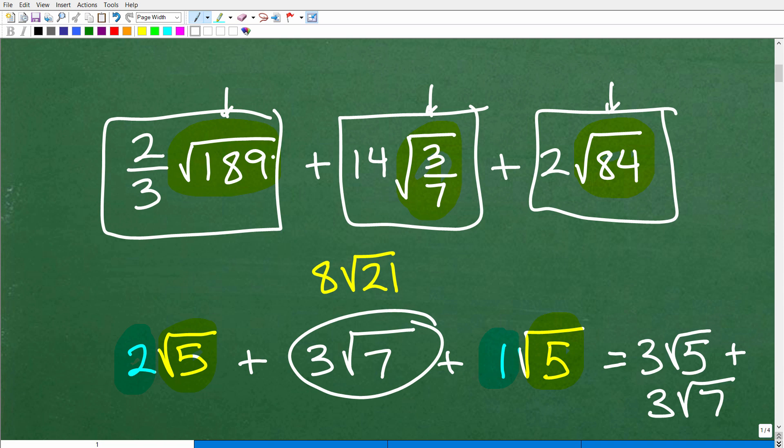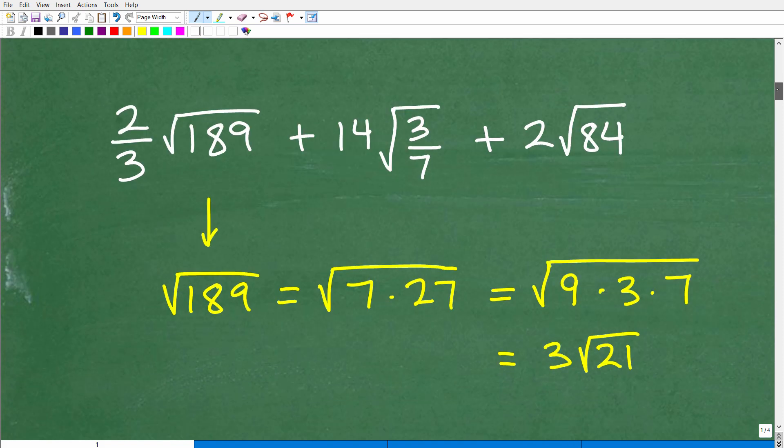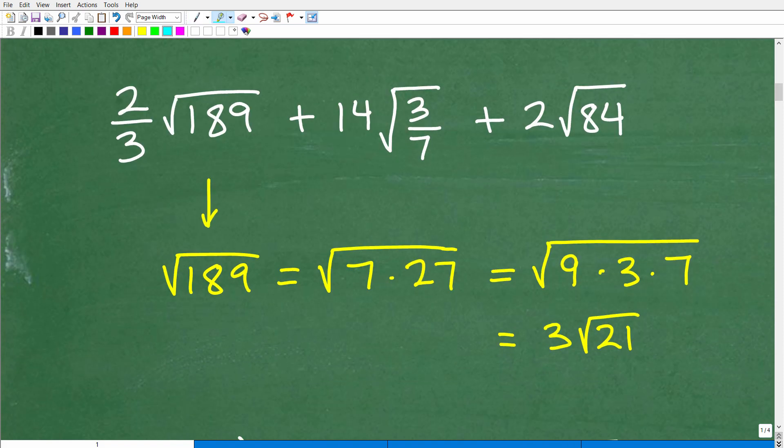So once we simplify all these square roots, we can see what we can combine because that's the main idea. So I'm kind of painting a big picture just in case you want to go ahead and tackle this problem. All right, so there is the solution. Let's go ahead and get into it right now. So as promised, I'm going to focus in on the square roots. And here we'll start with the square root of 189.